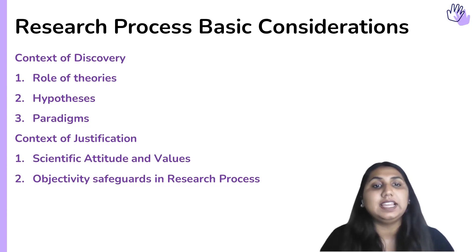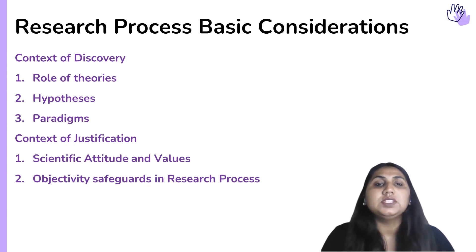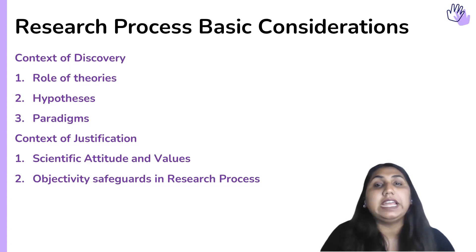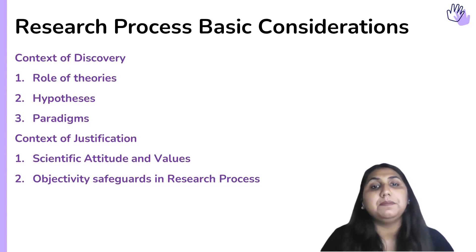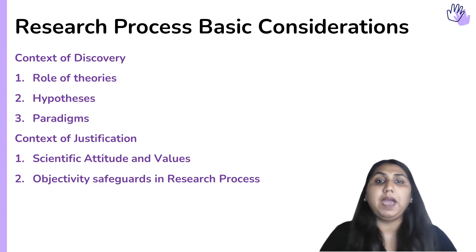Even if we never do scientific research, we still have to learn information on psychological research because it's useful to us. The process of psychological research is divided into two major categories occurring in sequence: first is the context of discovery, where you get an idea or insight — for instance, that memory or interpersonal relationships may be connected — and second is the context of justification, which involves testing that idea.